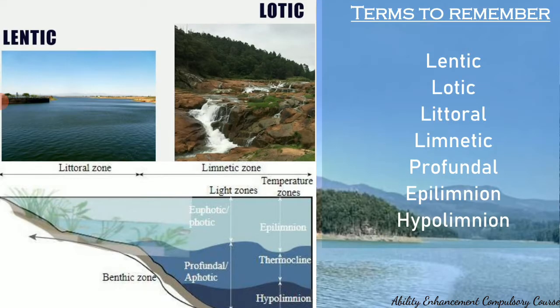The freshwater ecosystem can be either the lentic type or the lotic type. Lentic ecosystems are still or stagnant water ecosystems — for example, a pond, swamp, or lake. A lotic ecosystem, on the other hand, is a flowing water ecosystem. An easy way to remember: 'lentic lakes' for still water, 'lotic flowing' — flow low. Lotic ecosystems include rivers, streams, and waterfalls — anywhere the water is flowing.